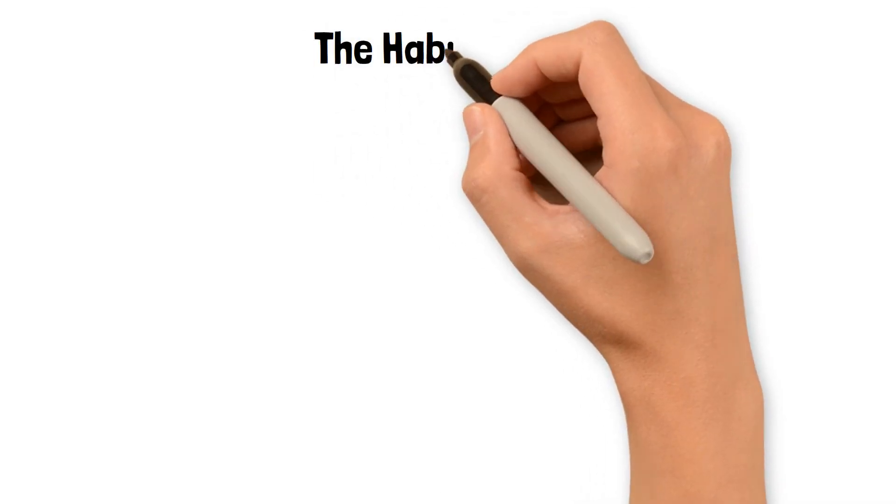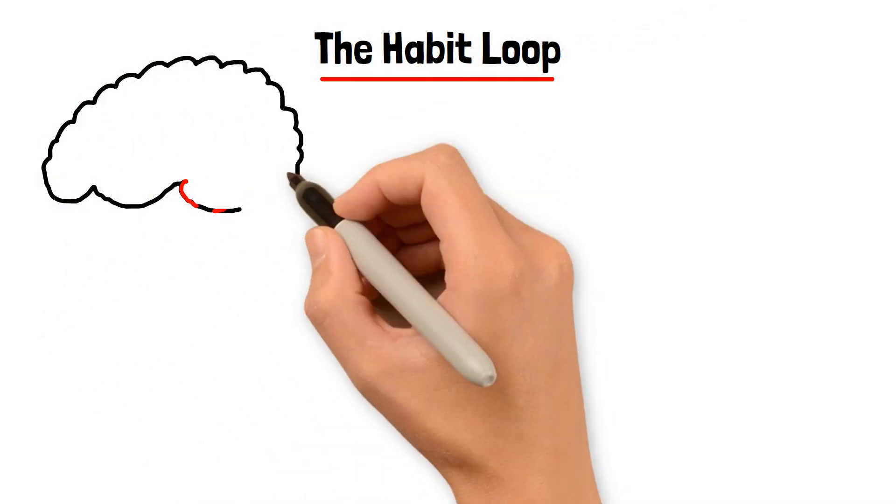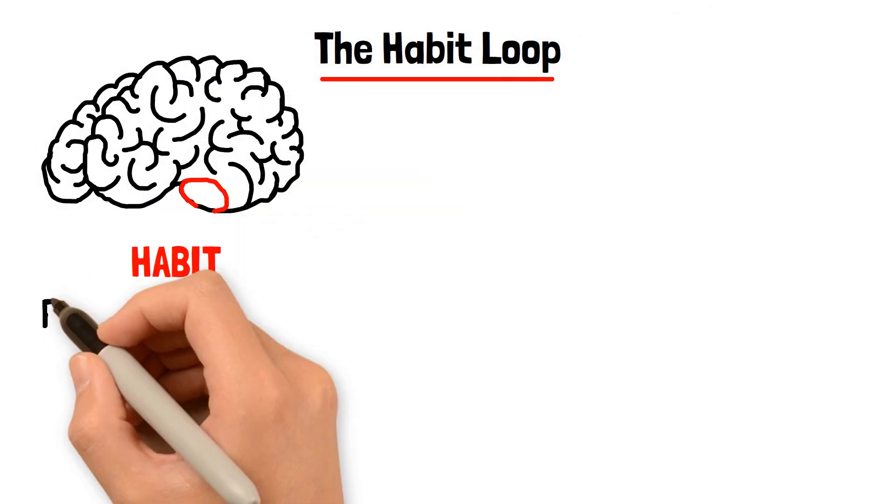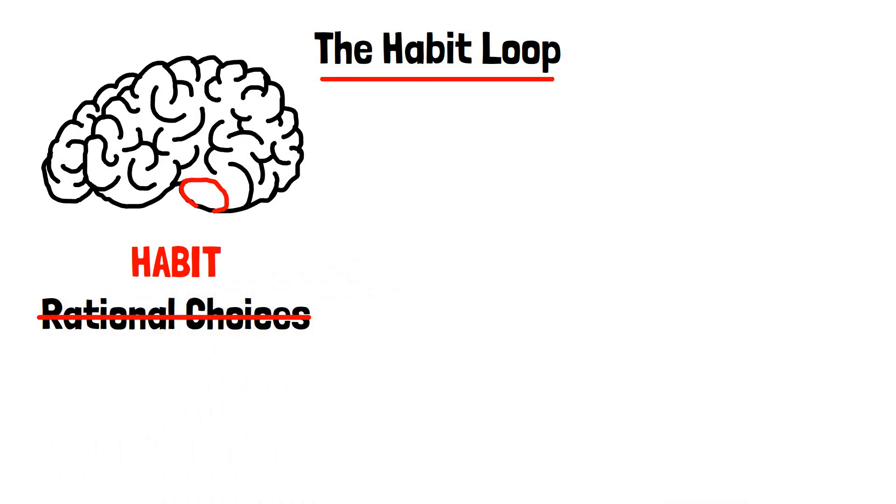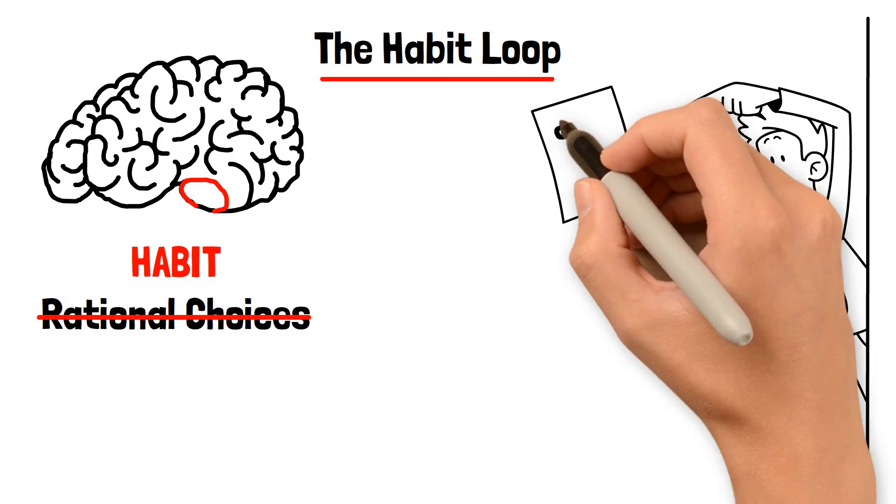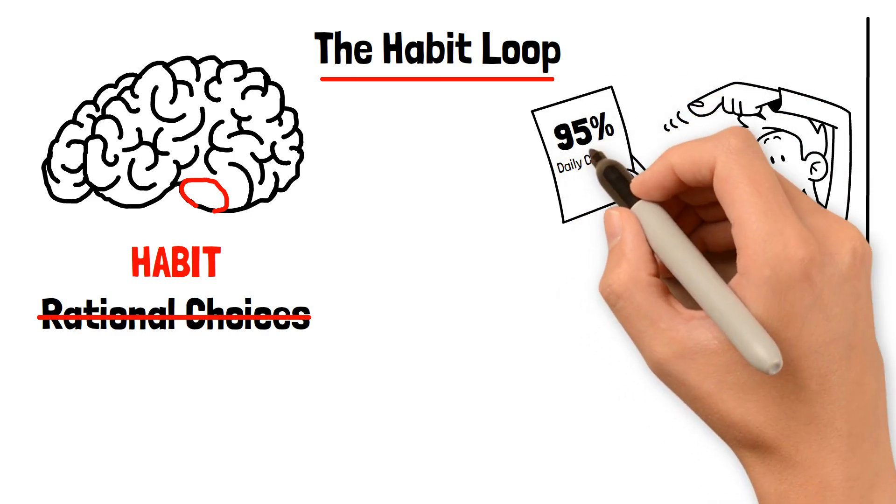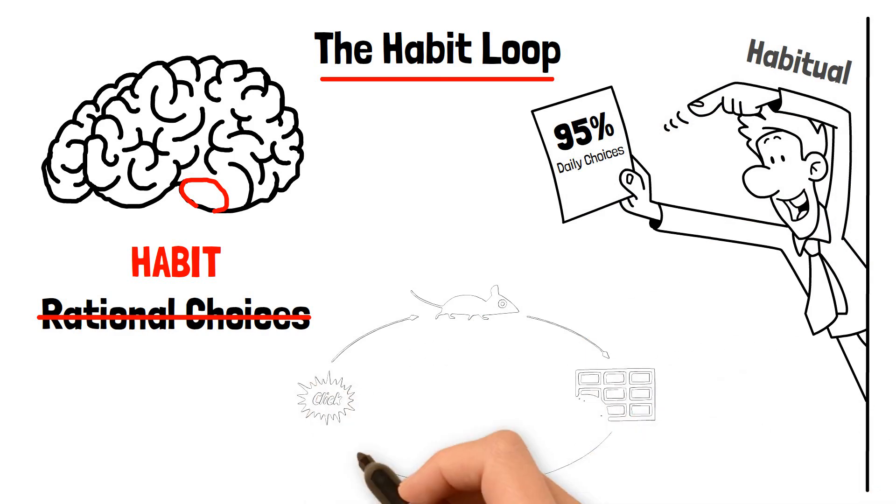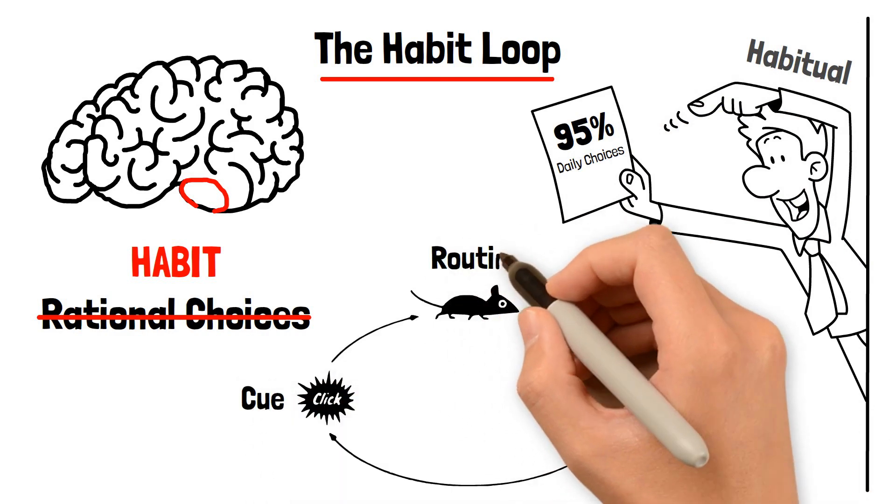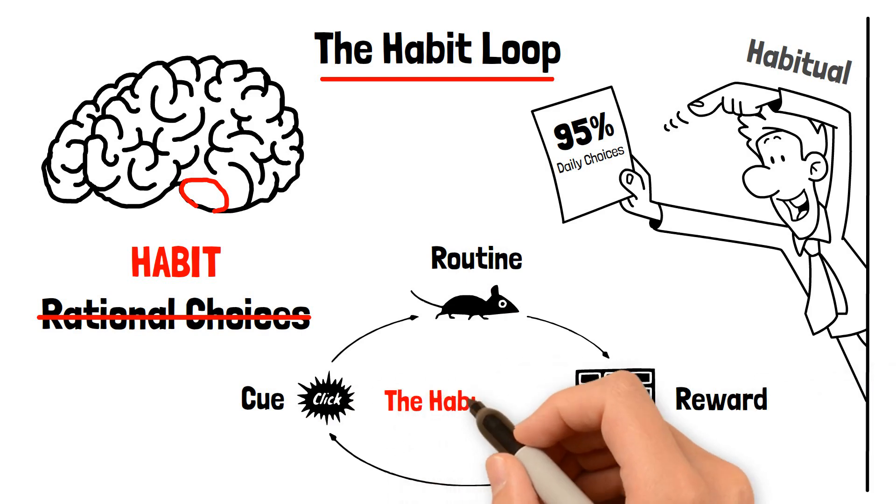The habit loop. Now we know that all our habits are stored in our basal ganglia, and that most of the time we act out of habit, not rational choices. Here comes the proof that 95% of daily choices are habitual, not cognitive. A habit is formed with repetition and consists of a cue, routine, and a reward. The habit loop.